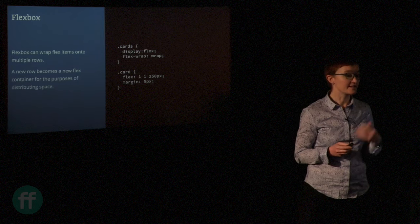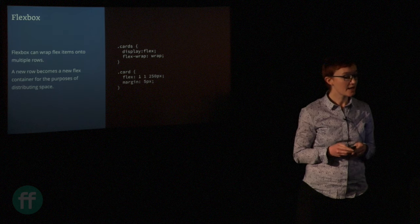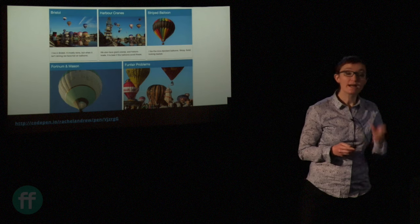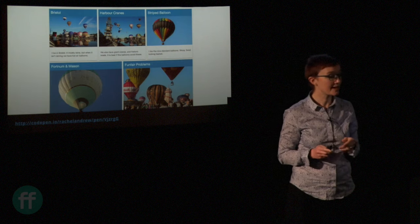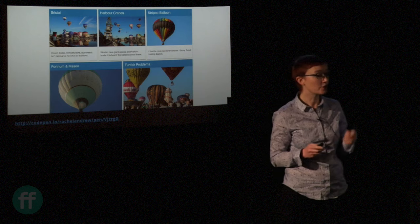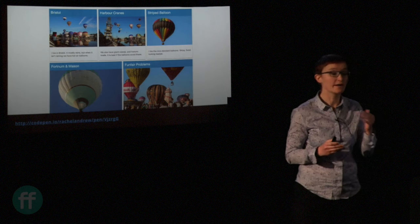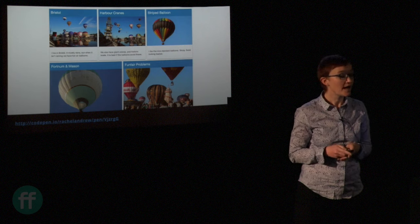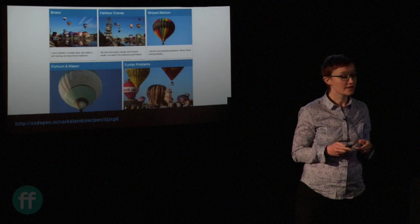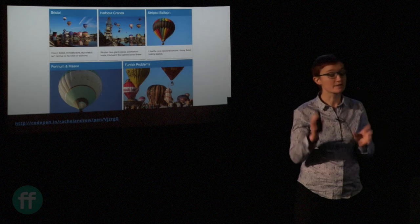If we were to do this with flexbox, we'd say display:flex, flex-wrap:wrap, give things a flex-basis so they wrap — and we'd end up with two items at the bottom splitting the space. There's not an easy way to say 'if there's only two of you, line up underneath the items above,' because with flexbox space distribution happens row by row. You have a new flex container essentially as you wrap onto a new row. That's really the difference between grid and flexbox — with grid we've got the whole container and we put items into it.